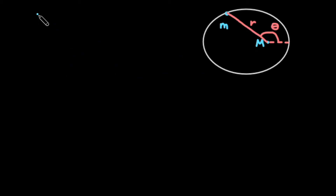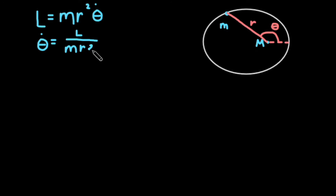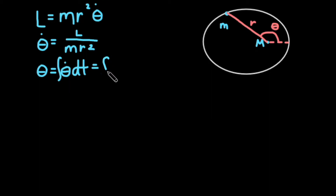The angular momentum of the planet in radial coordinates will be m times r squared times theta-dot. If we rewrite this in terms of theta-dot, then the change in angle per time is equal to the angular momentum divided by r squared and m. This makes the angle equal to the integral of l divided by r squared and m.